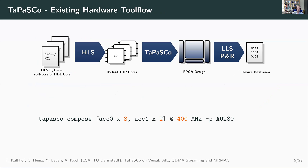This is how the existing hardware tool flow of Tapasco looks like. You can either provide your PE as HLS C++ kernels or directly as an HDL core. If you provide HLS kernels, Tapasco performs HLS so that we have IP-XACT IP cores, which are then used to build the Tapasco FPGA design — where we basically add a shell around the PEs, including a DMA engine, interrupt controller, and similar. Tapasco then uses Vivado to generate the device bitstream. The compose command could look like this: you provide the PEs you want, say how many of each PE you want, state the clock frequency, and specify which supported platform you want.